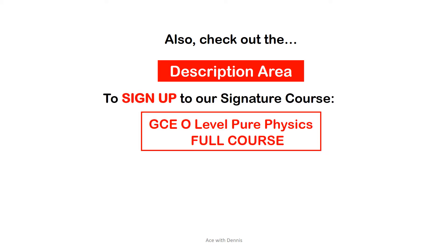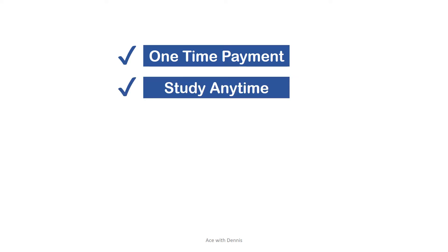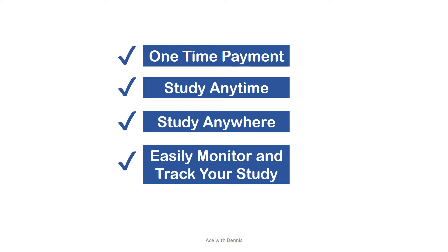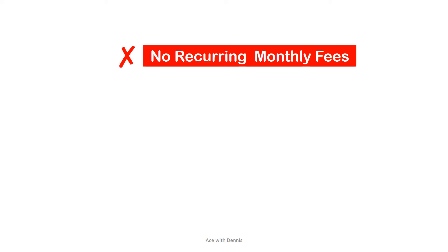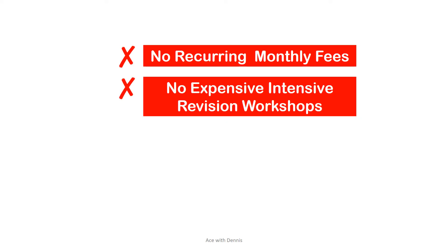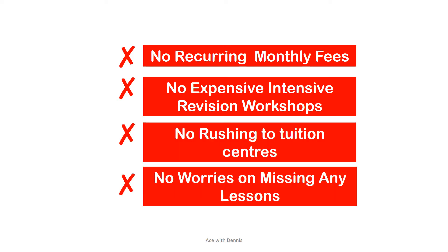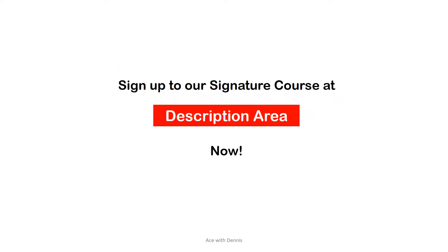Check out the description area to sign up to our signature course — GCSE level pure physics full course at an unbelievable price. It's a one-time payment. You can study any time you like, anywhere at your convenience. You can also easily monitor and track your study with Udemy's system. There are no recurring monthly tuition fees, no expensive intensive revision workshops, and you don't have to rush to any tuition centers or worry about missing any lessons. Sign up to our signature online course in the description area now.